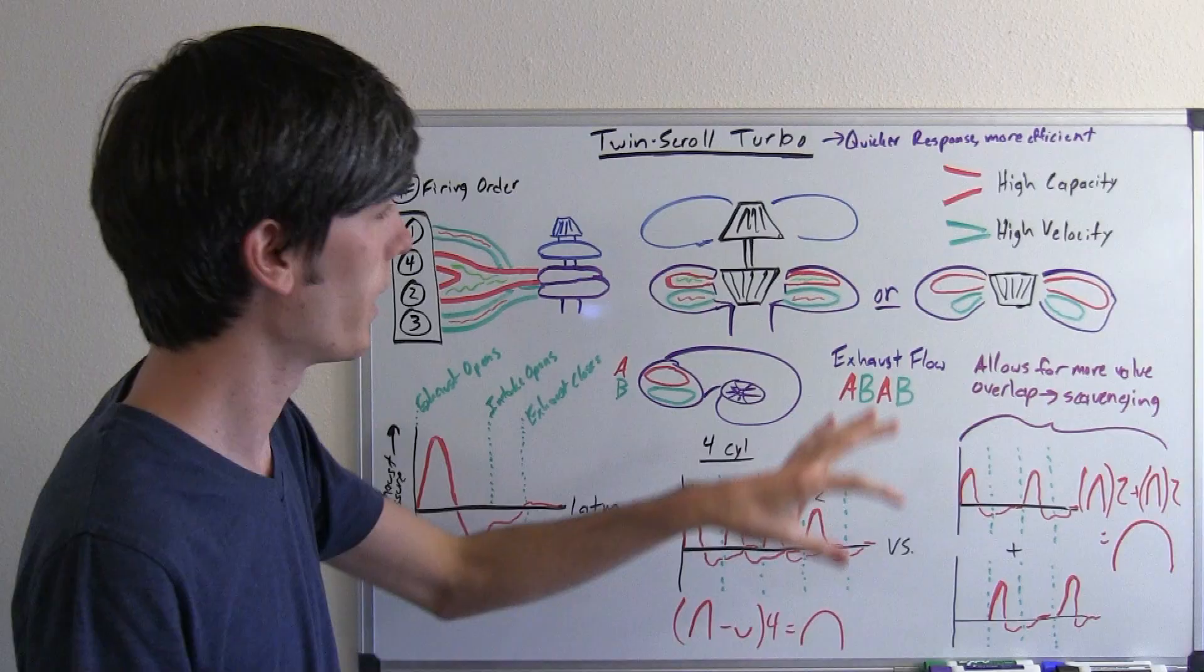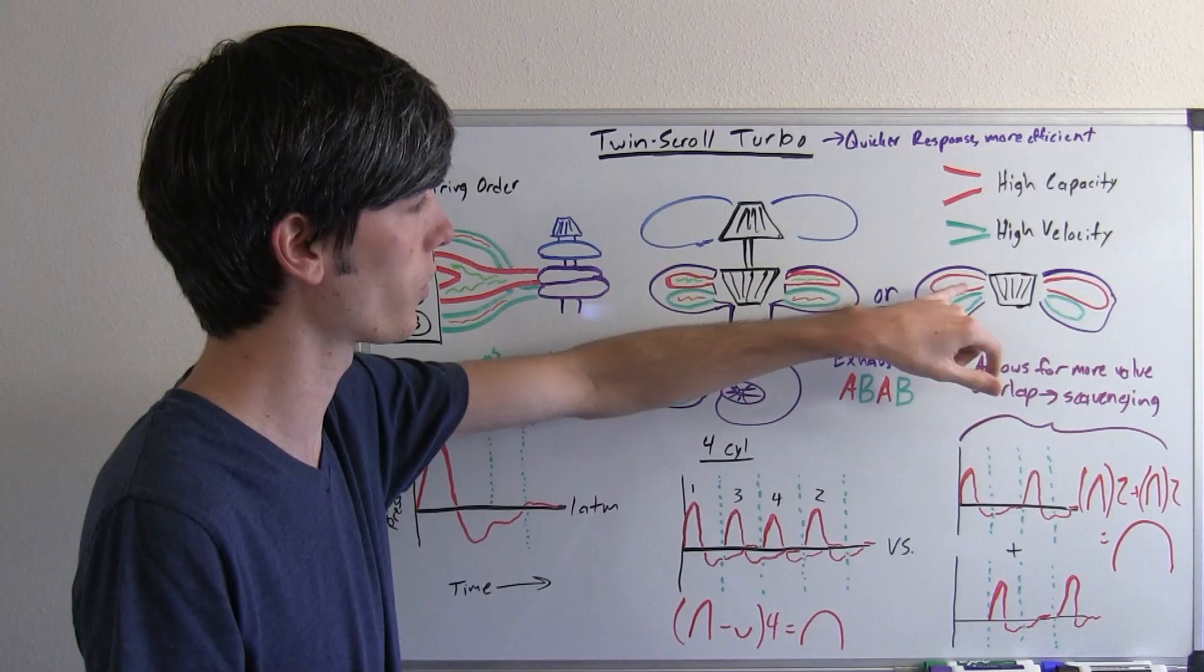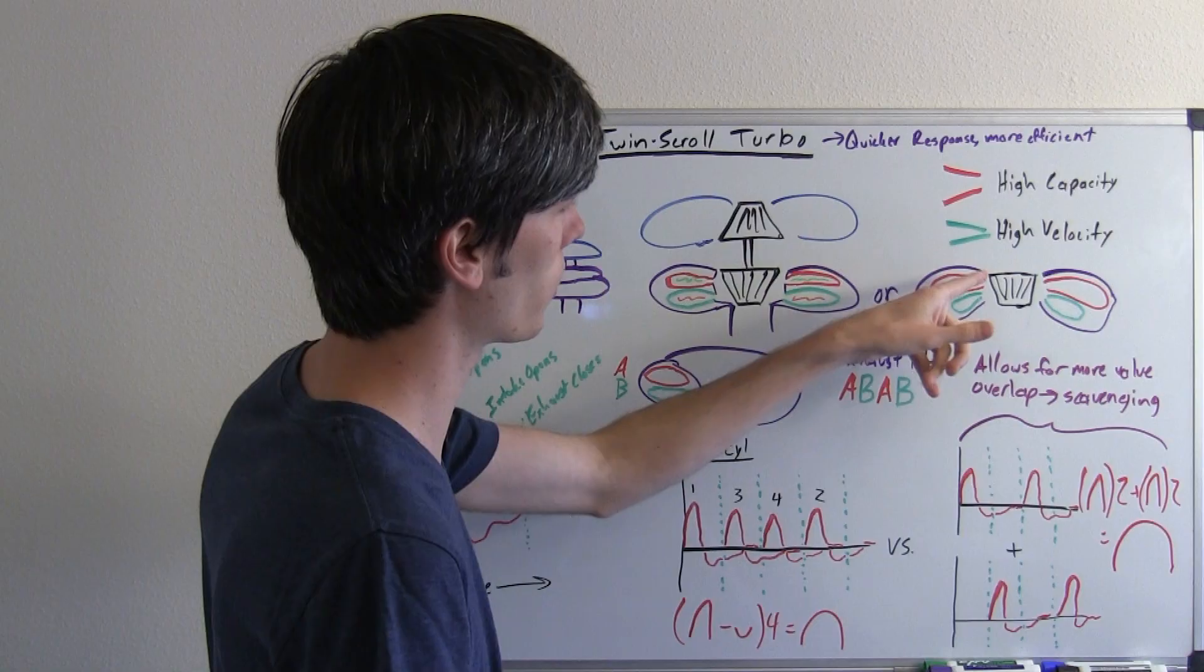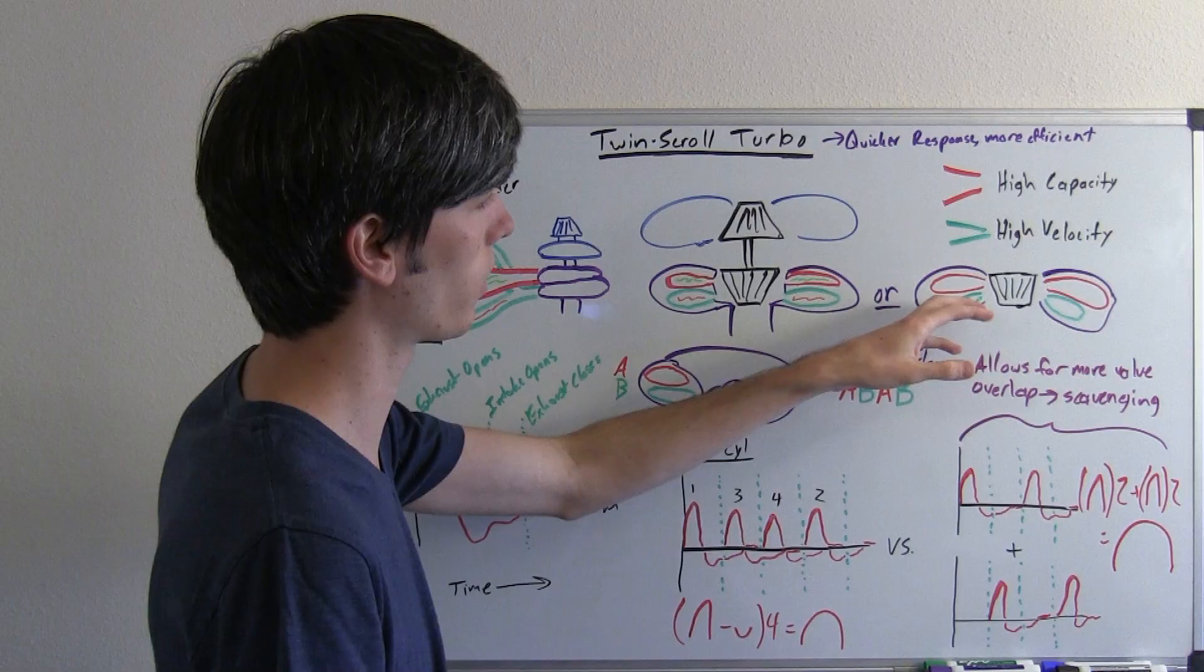Now, another method of twin scroll turbochargers you actually have different size scrolls or channels inside of this turbo. So, for example here, the red one is larger and approaches it directly from the side, whereas you have a smaller channel at an angle on the top.